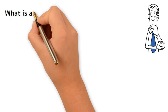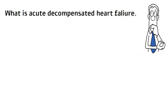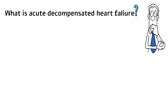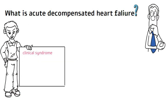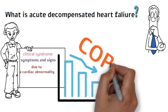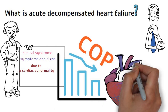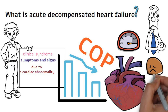What is Acute Decompensated Heart Failure? It is a clinical syndrome characterized by symptoms and signs due to a cardiac abnormality, resulting in reduced cardiac output and elevated intracardiac pressures at rest or during stress.